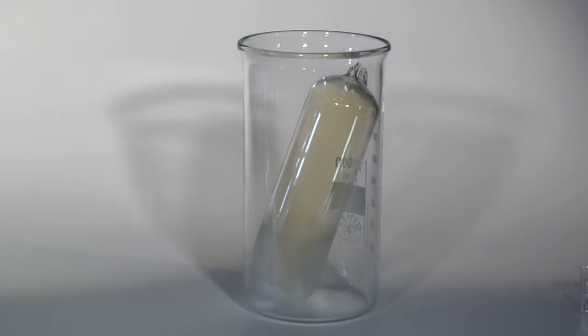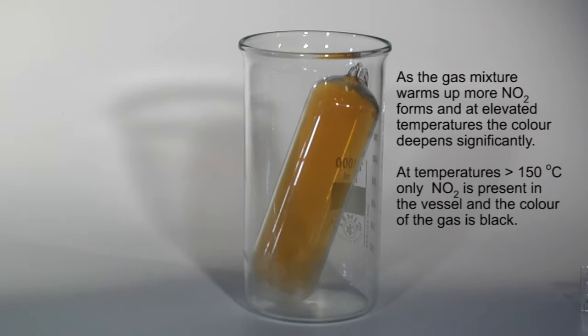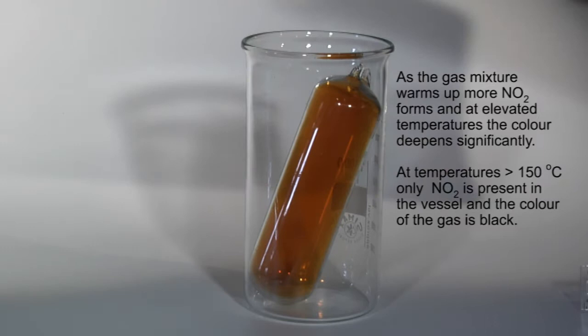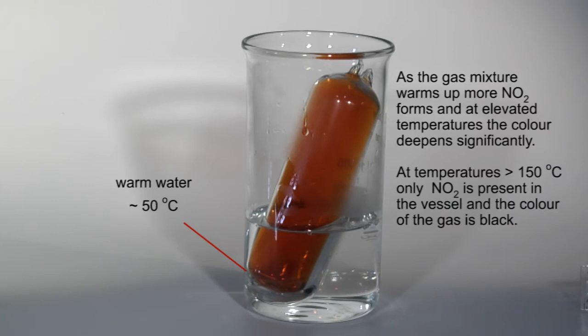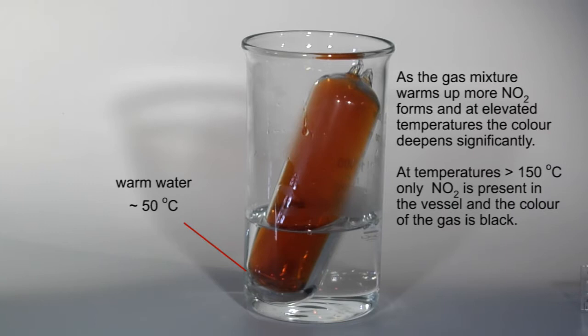The mixture needs to be heated to temperatures in excess of 150 degrees Celsius in order to shift the equilibrium to the extent where effectively only nitrogen dioxide remains. The gas would then appear almost black. To do this in this thin-walled glass vessel would, however, be hazardous.